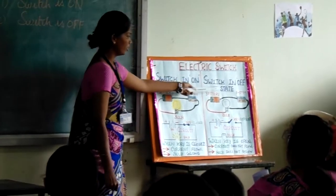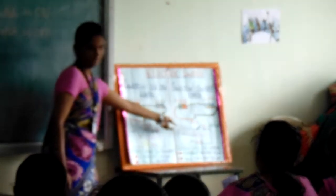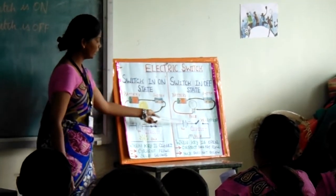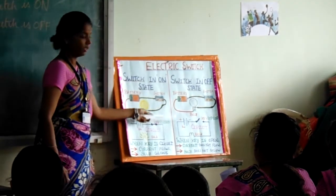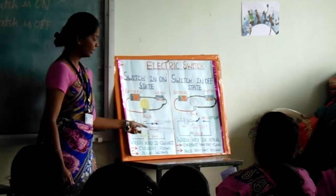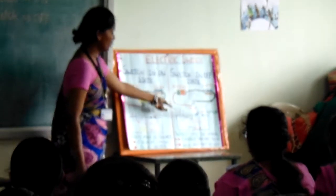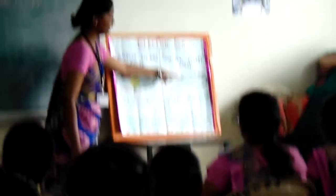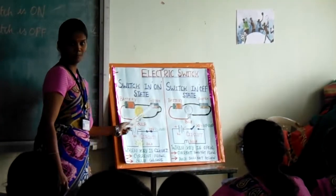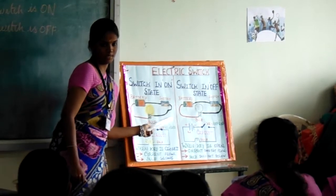See the second circuit — switch in the off state. Here the key is in the open state. When the key is open, the circuit will not be complete. So current does not flow through the circuit, and automatically the bulb does not glow. When the switch is open, it means the switch is in the off position. These are the two types: switch in the on state and switch in the off state.